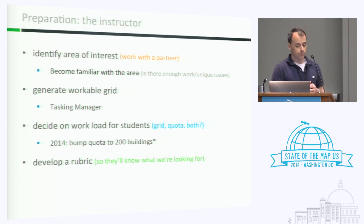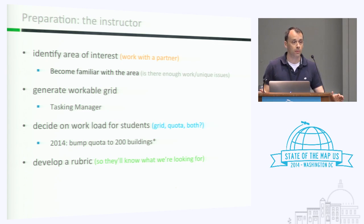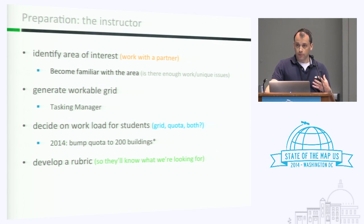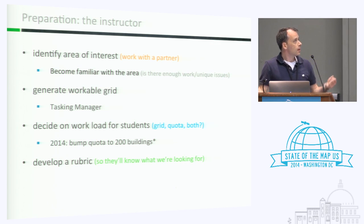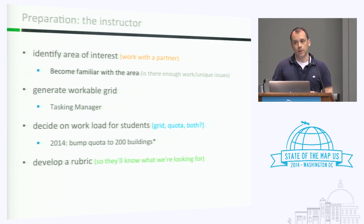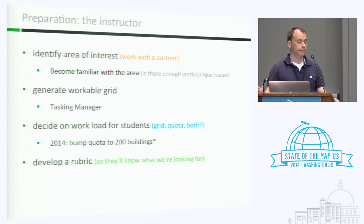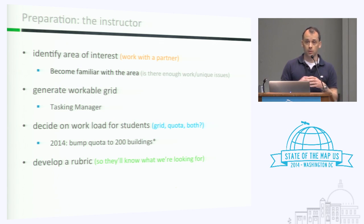The first thing that needs to happen to bring this into the classroom is instructor preparation: identify an area of interest. We like to do this with one of the aid agencies we've become familiar with — the American Red Cross and the GeoCenter at USAID are the two we've primarily worked with. We don't really care where we map, but we would like it to actually matter. Once the area is identified, we familiarize ourselves with it — how much work it will take, where the high- and low-density areas are — and then generate a workable grid using Tasking Manager, which divides the area into equal-size squares.